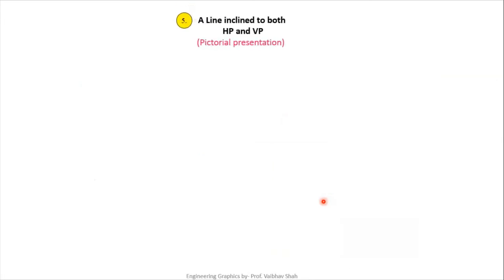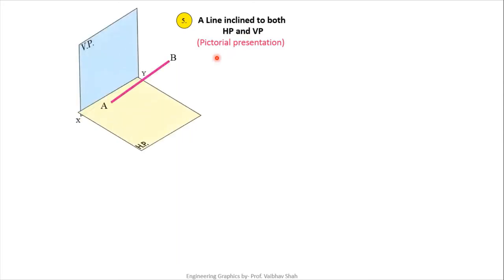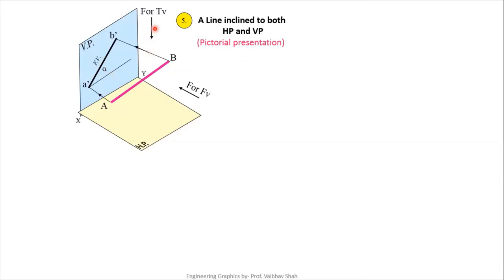Case 5 — the most important case: a line inclined to both HP and VP. The line makes angle theta with HP. It is also inclined to VP because each point of the line is at different distances from VP — point A is nearer, point B is farthest. Taking the front view, we get line A'B' at angle alpha. Taking the top view, we get a line at inclination beta with respect to VP. The top view is inclined at beta degrees to XY and the front view is inclined at alpha degrees to XY.